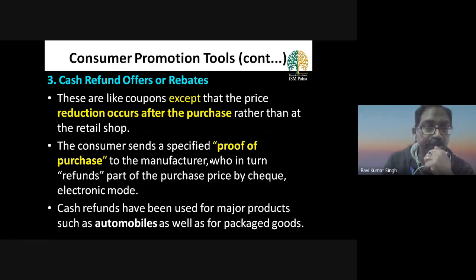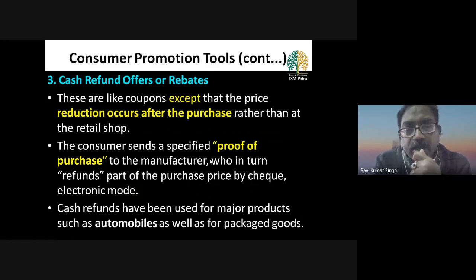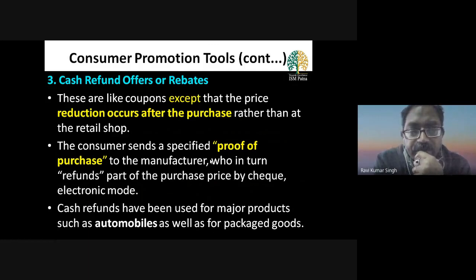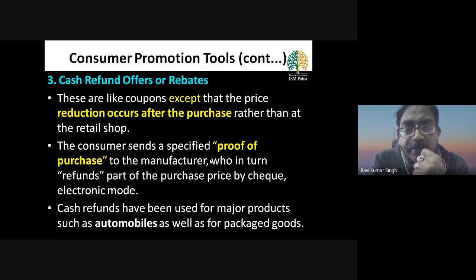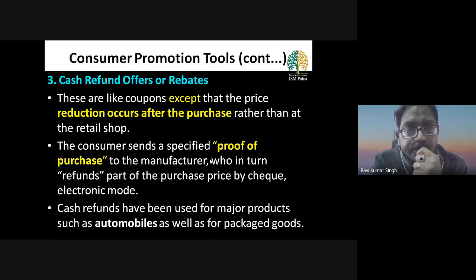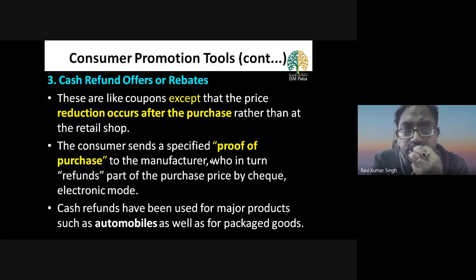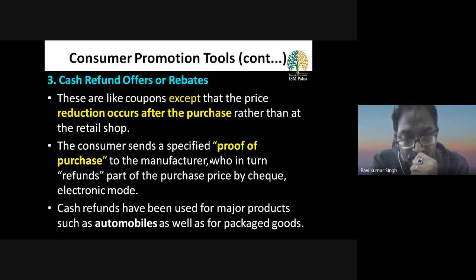The third tool is cash refund offers or rebates. These are like coupons, except that the price reduction occurs after the purchase rather than at the retail shop. You submit proof of purchase to the manufacturer, and in return they send a refund — which can be via cheque, or through an e-wallet or other electronic modes.